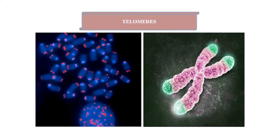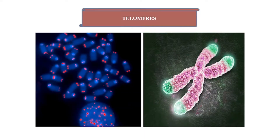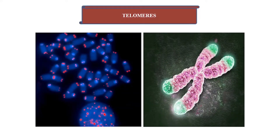At the end of each chromosome is a repetitive nucleotide sequence cap called a telomere. These DNA regions serve a critical role of preserving the genomic sequence by protecting the genome from degradation and inhibiting chromosomal fusion and recombination.